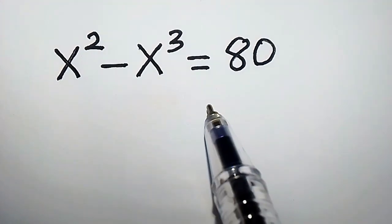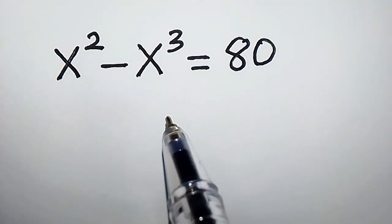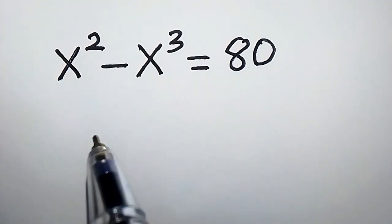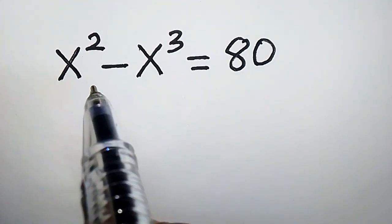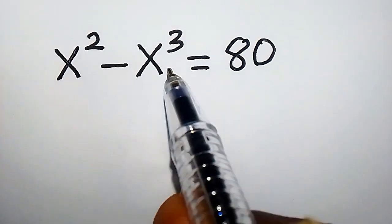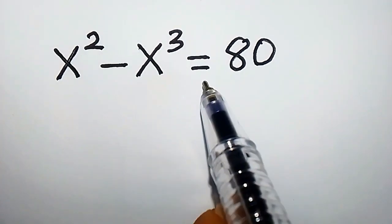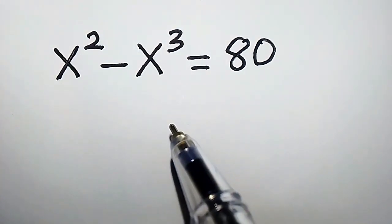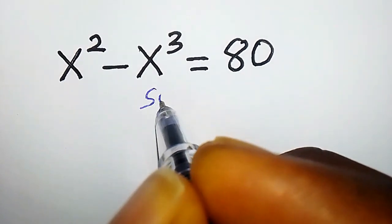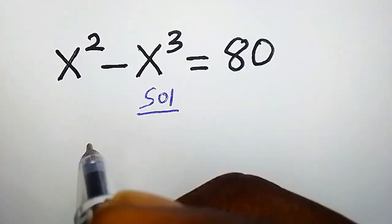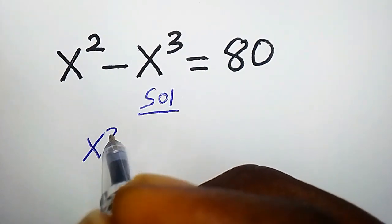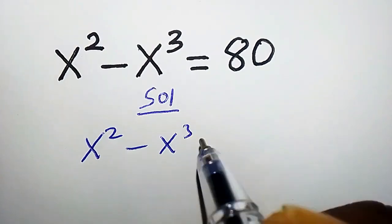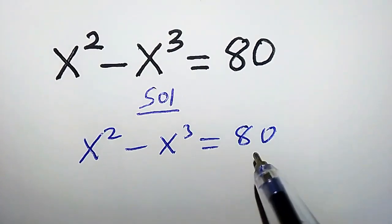In this video we are going to solve a very cool and interesting problem: x to the power of 2 minus x to the power of 3 equals 80. How do we solve for x? Solution: we have x squared minus x cubed equals 80.